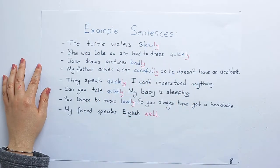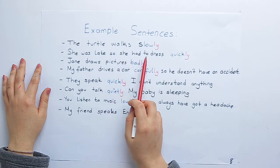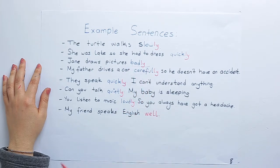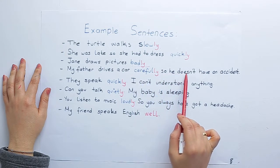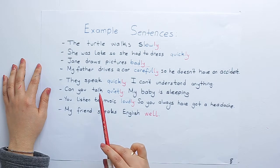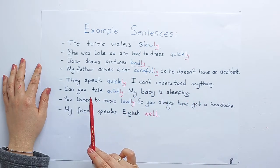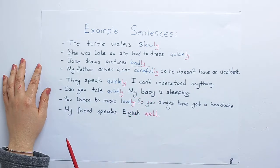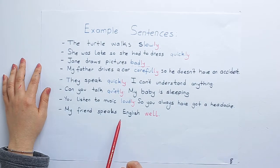Example sentences: The turtle walks slowly. She was late, so she had to dress quickly. Jane draws pictures badly. My father drives the car carefully, so he doesn't have an accident. They speak quickly — I can't understand anything. Can you talk quietly? My baby is sleeping. You listen to music loudly, so you always have a headache. My friend speaks English well.